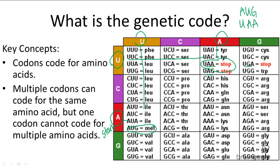If you think about it, this code is really incredible. Other than a few exceptions, this can be called the universal code, because it is pretty much the same in all organisms. And it only uses four different nucleotide bases to code for all 24 different amino acids.